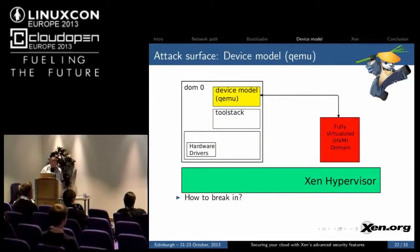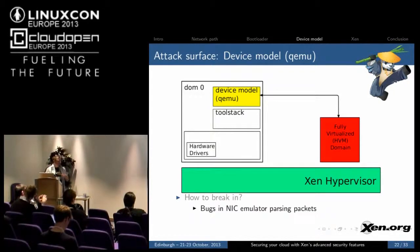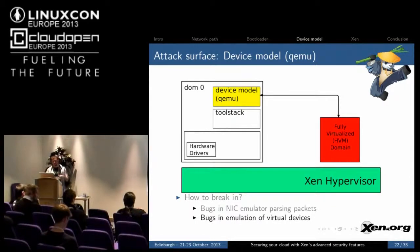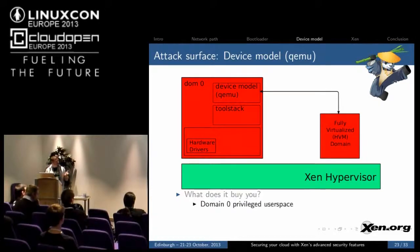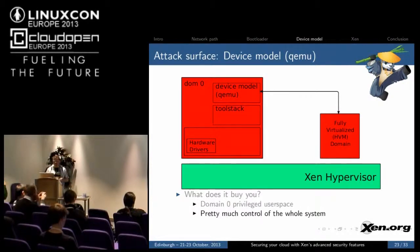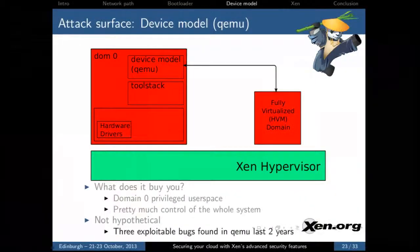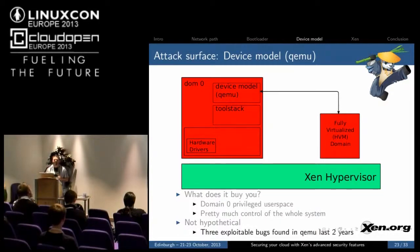The next attack surface we're going to consider is QEMU, the device model. How might someone break in? There may be bugs in the network interface card emulator, and there may be bugs in the emulation of the virtual devices so that an attacker from the guest operating system may be able to break into QEMU. Because QEMU has to be able to read and write other guests' memory, gaining access gives you DOM0 privileged user space — essentially control of the whole system. This is not a hypothetical scenario: in the last two years for Xen, there have been three exploitable bugs in the QEMU emulator — two in the E1000 network card emulator and one in a SCSI emulator, though none were in devices on by default.